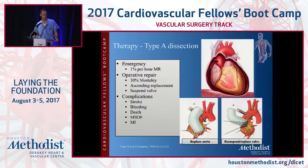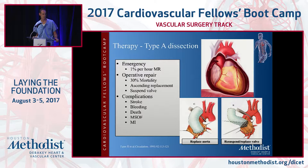For type A dissections, they are emergencies, and we consider about 1% mortality rate per hour. Operative repair still has a pretty high mortality rate of about 30%. Generally, you want to do the least possible, and most of the time that's just an ascending replacement — sometimes you'll have to suspend the valve. Your anesthesiologist will be doing a TEE. The complications are significant: stroke, bleeding, death, multi-system organ failure, and MI.